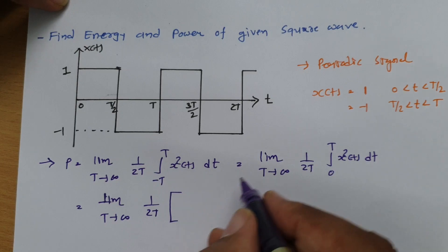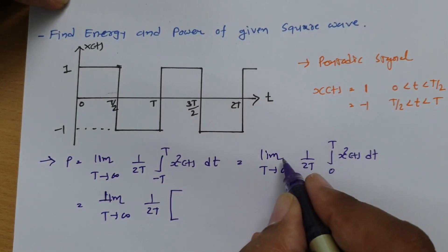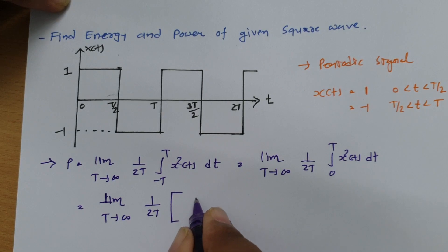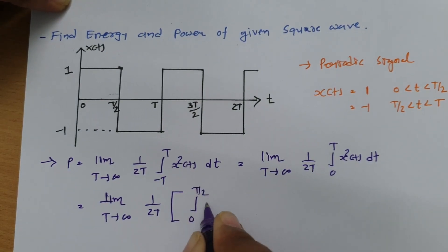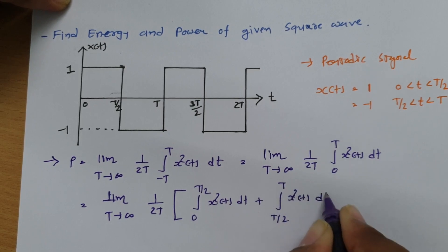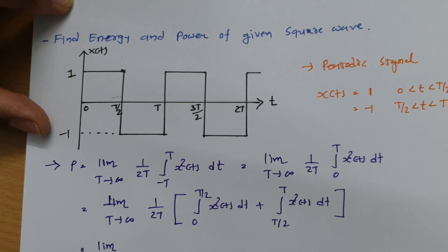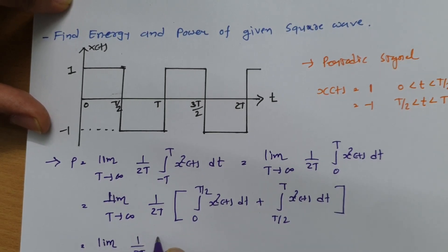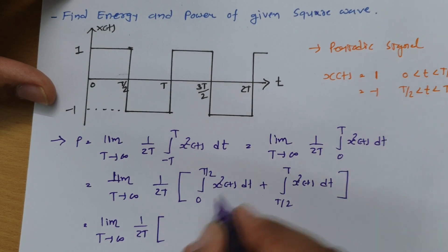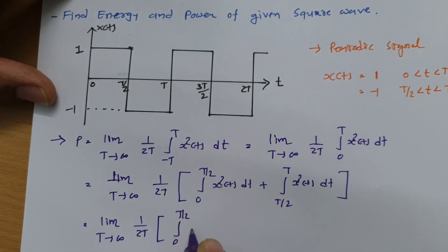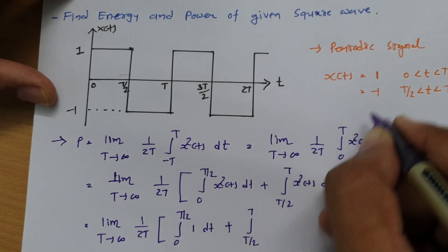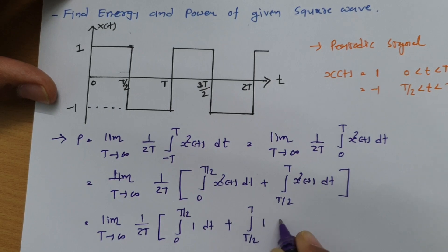Since the signal has two parts, we split into two integrals: from 0 to T/2 where x(t) = 1, and from T/2 to T where x(t) = −1. So: (1/2T) × [integral from 0 to T/2 of 1² dt + integral from T/2 to T of (−1)² dt], which equals (1/2T) × [integral from 0 to T/2 of 1 dt + integral from T/2 to T of 1 dt].